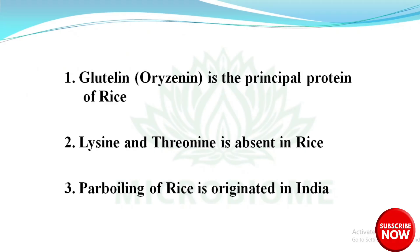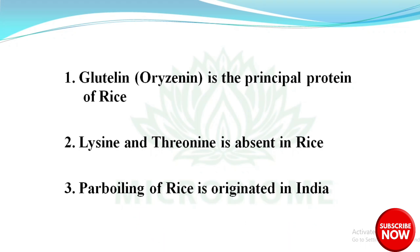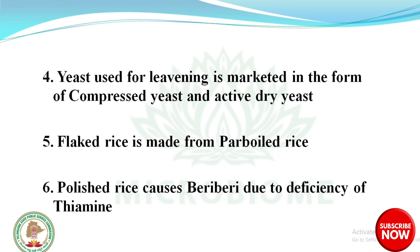1. Glutalin — Oryzenin is the principal protein of rice. Lysine and threonine are absent in rice. Parboiling of rice originated in India. Yeast used for leavening is marketed in the form of compressed yeast and active dry yeast. Flake rice is made from parboiled rice.